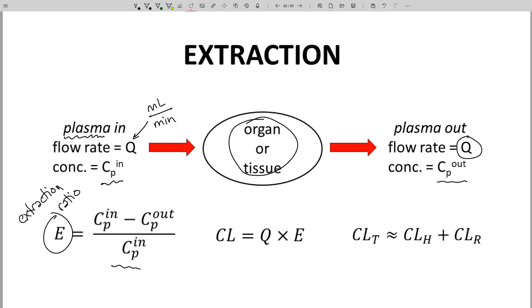Clearance for an organ is Q times E. Total clearance equals the sum of all the different organ and tissue clearances in the body. The two main organs are the liver and kidneys. The liver clears through metabolism and the kidneys clear through filtration.